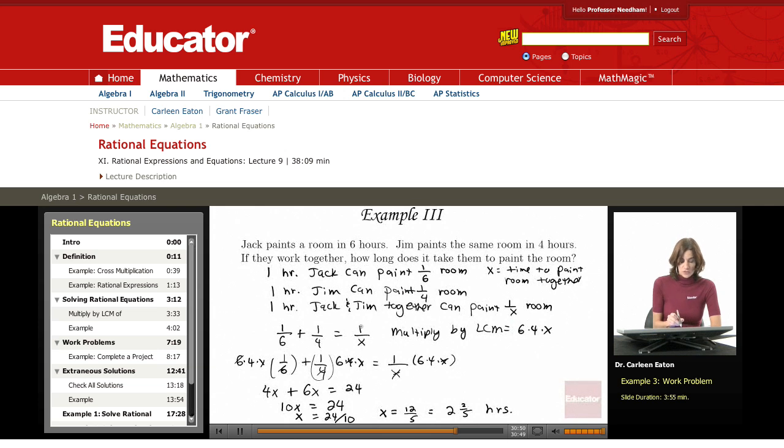Therefore, 1/6 + 1/4 equals the amount of the room they can paint together in one hour. I multiplied by the LCM to get 4X + 6X = 24. So 10X = 24, which is 24/10 or 12/5, which is 2 and 2/5 hours.